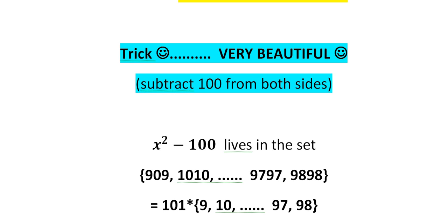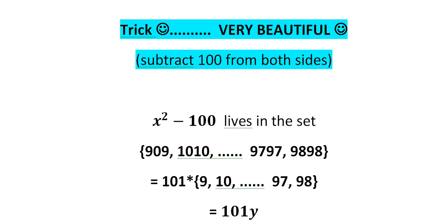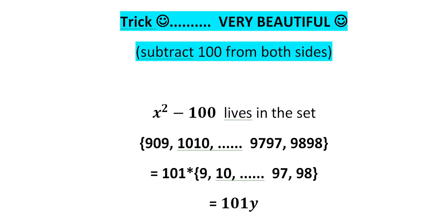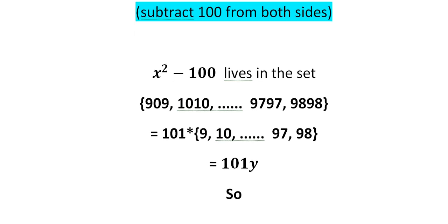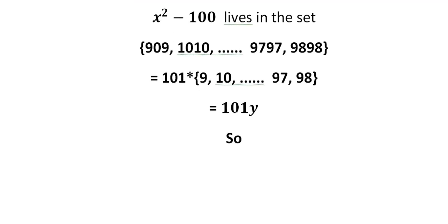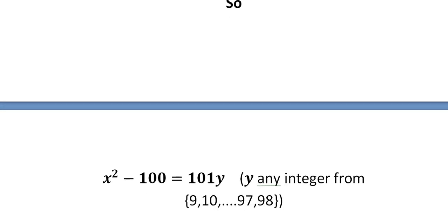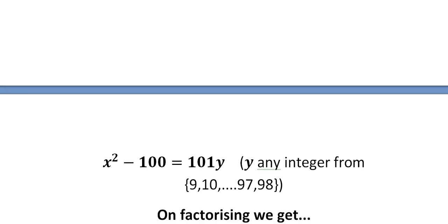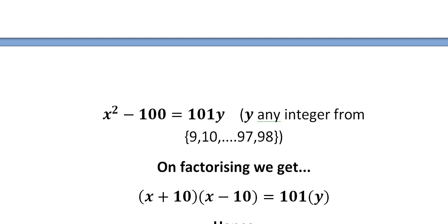Since all the values are divisible by 101, we can factor out 101 and rewrite the set. So x² − 100 is equivalent to 101 times any number from 9 up to 98. These are all our possible solutions, and we can rewrite that as 101y, where y lives in the set of integers from 9 up to 98. So we now have x² − 100 = 101y, where y is any integer from 9 to 98.